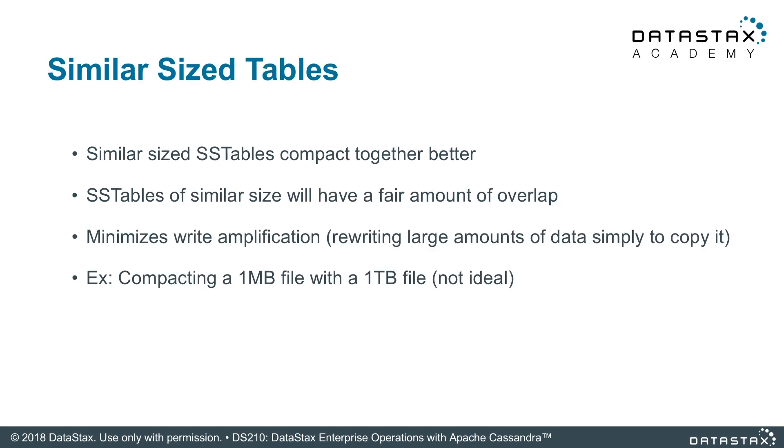Similar-sized files are always going to be optimized for, and similar-sized files do have a fair amount of overlap — that's fine. But we're minimizing write amplification. Write amplification is when you write the data once and it causes an I/O event — something written to disk — that triggers more writing to disk, which triggers more writing to disk. We don't want that chain reaction. We want it to write once, maybe compact once, and be done. For every piece of data going into your system, you don't want it to be continuously rewritten.